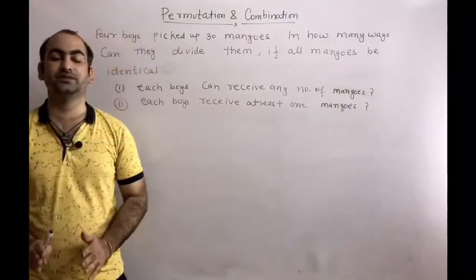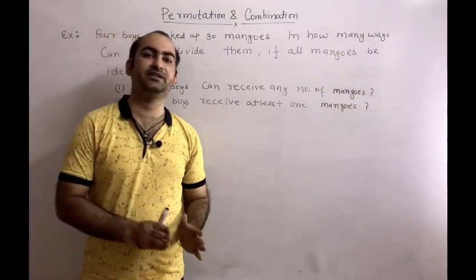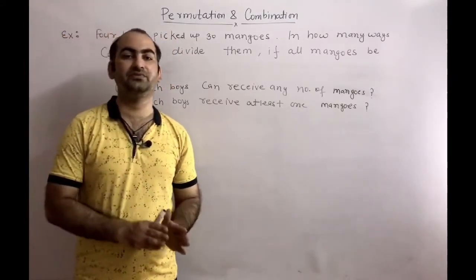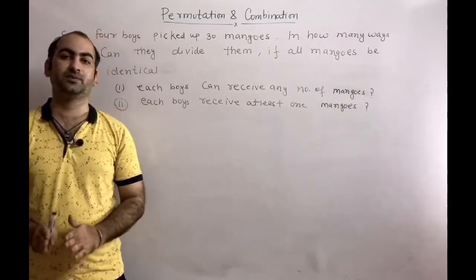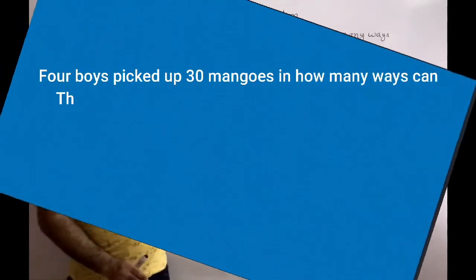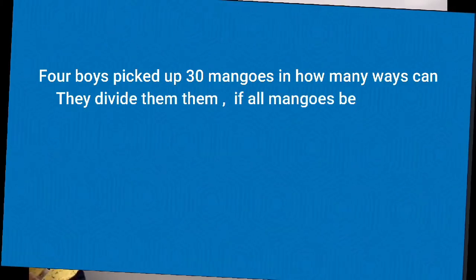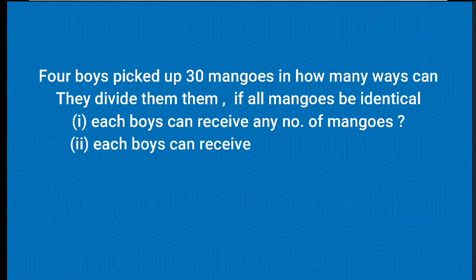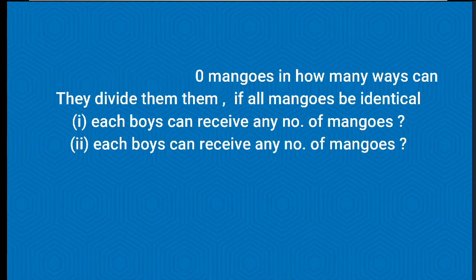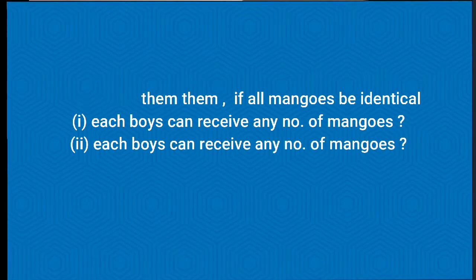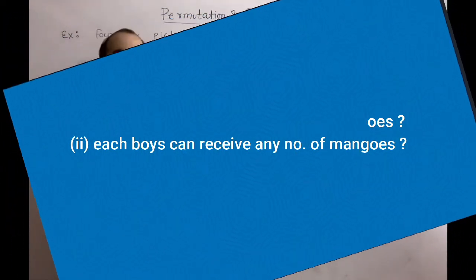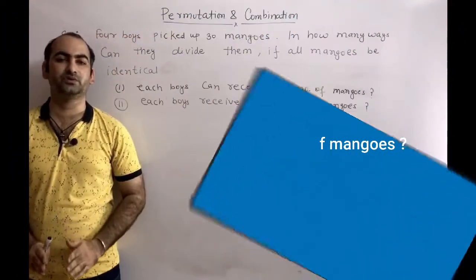Hello everyone. In the last class we discussed distribution of identical things. In this lecture we are discussing problems based on distribution of identical things. The first problem is: four boys picked up 30 mangoes, in how many ways can they divide them if all mangoes are identical? We have two sub-problems: first, each boy can receive any number of mangoes; second, each boy receives at least one mango.